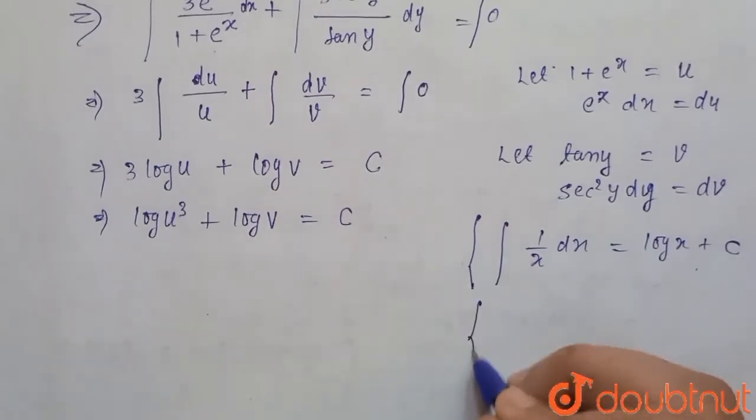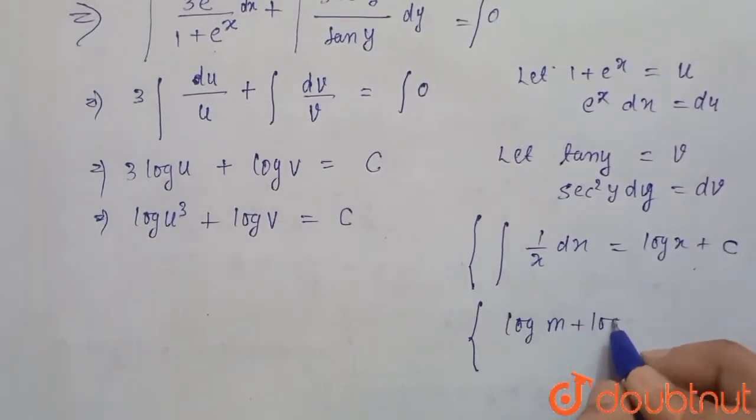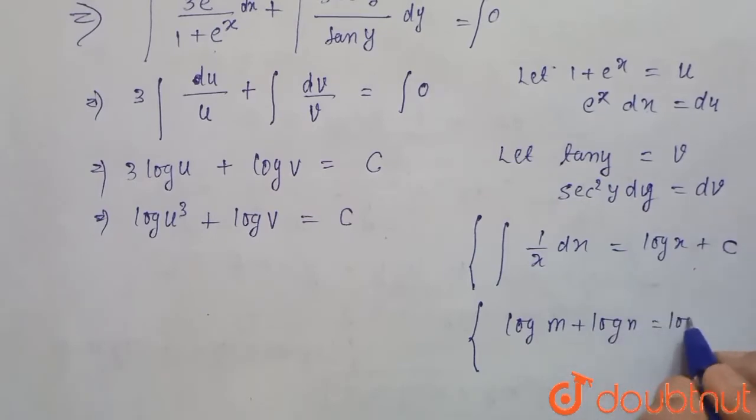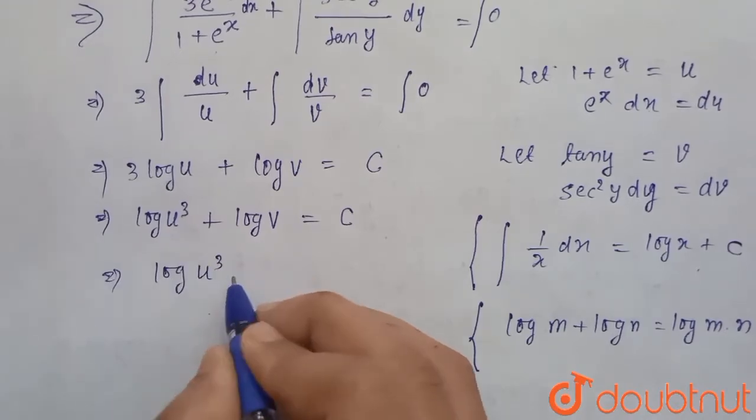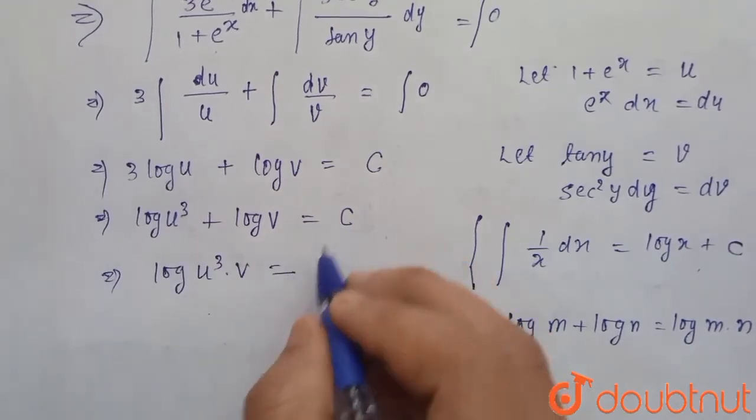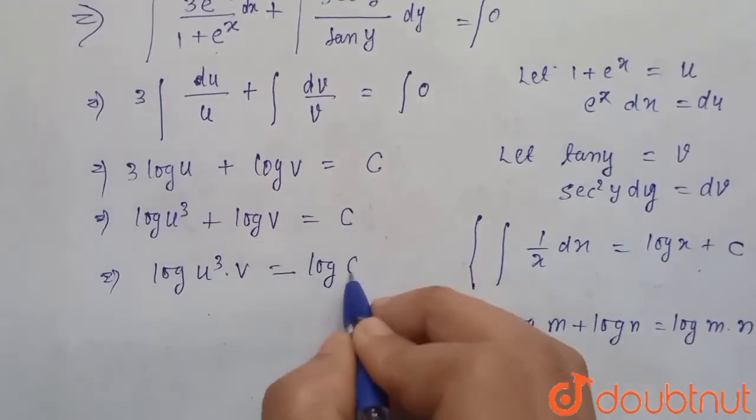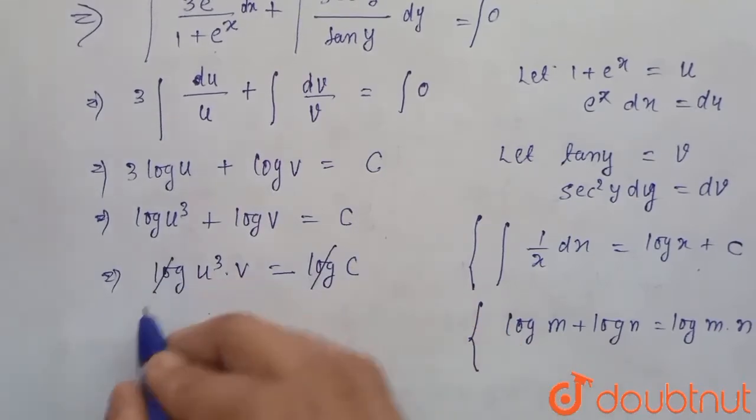Now again by property of log, that is log m plus log n equals log m times n, we can write this as log u³ times v. And we can write c as log c. So now cancel this log with this log, so we have u³ times v